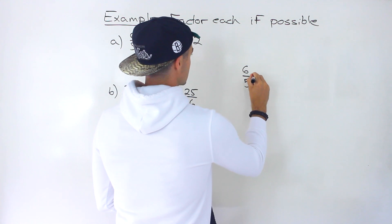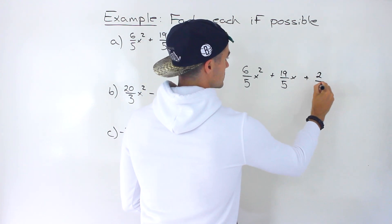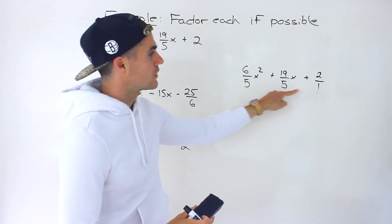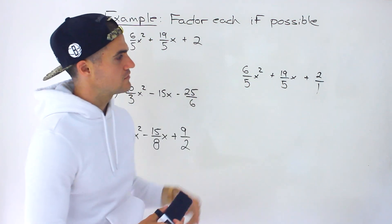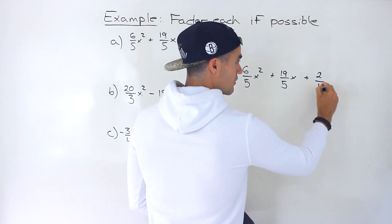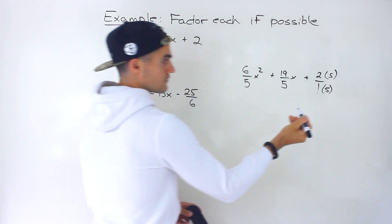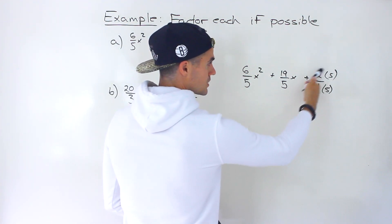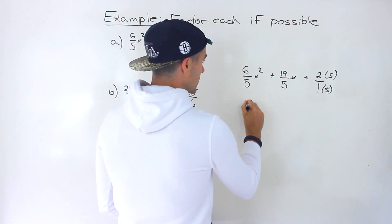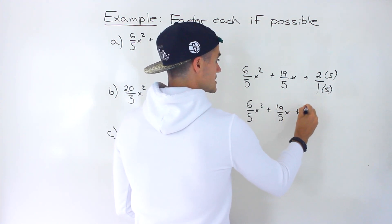So we've got 6 over 5x² plus 19 over 5x plus 2. Now this 2 over here, I'm just going to put over 1. Notice we have a denominator of 5, a 5 over here, but here we have a denominator of 1. The lowest common denominator between 5 and 1 is 5. So we multiply the 1 by 5 to get a denominator of 5, and multiply the top by 5 as well, changing it to 10 over 5. The new expression is 6 over 5x² plus 19 over 5x plus 10 over 5.